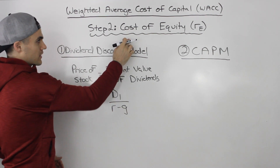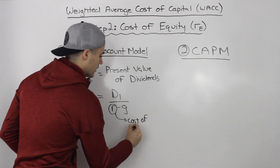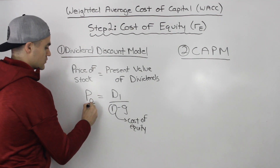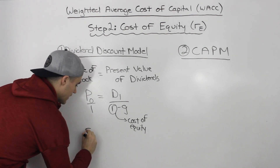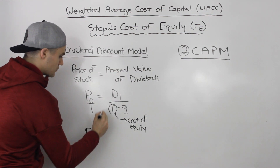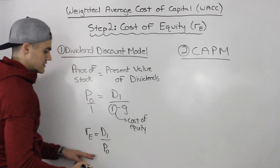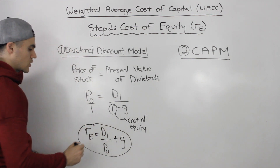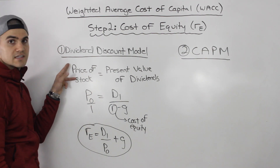The cost of equity is this r value. If you rearrange the equation and isolate for RE, you get: RE = D1 / P0 + g. That is, the cost of equity equals the dividend in the first year divided by the price at time zero, plus the growth rate. This is the equation you'll use most often in this section when using the dividend discount model.